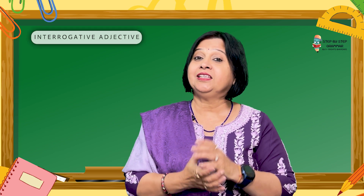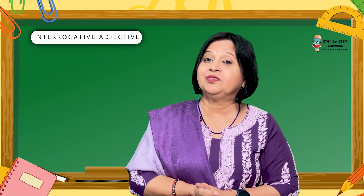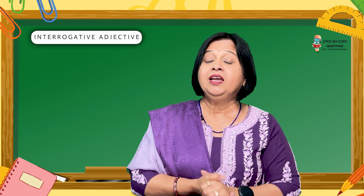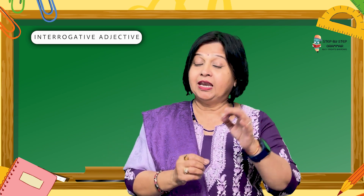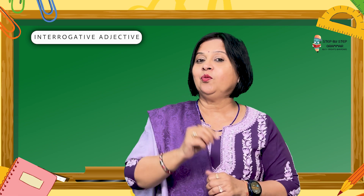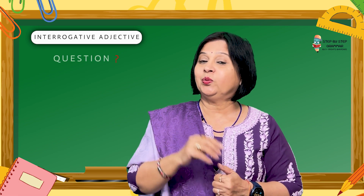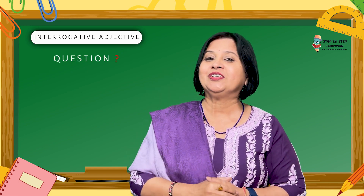The fifth kind of adjective is the interrogative adjective. Interrogative adjectives always ask a question: which, what, whose. These adjectives are always placed before the noun, and these sentences always end with a question mark.